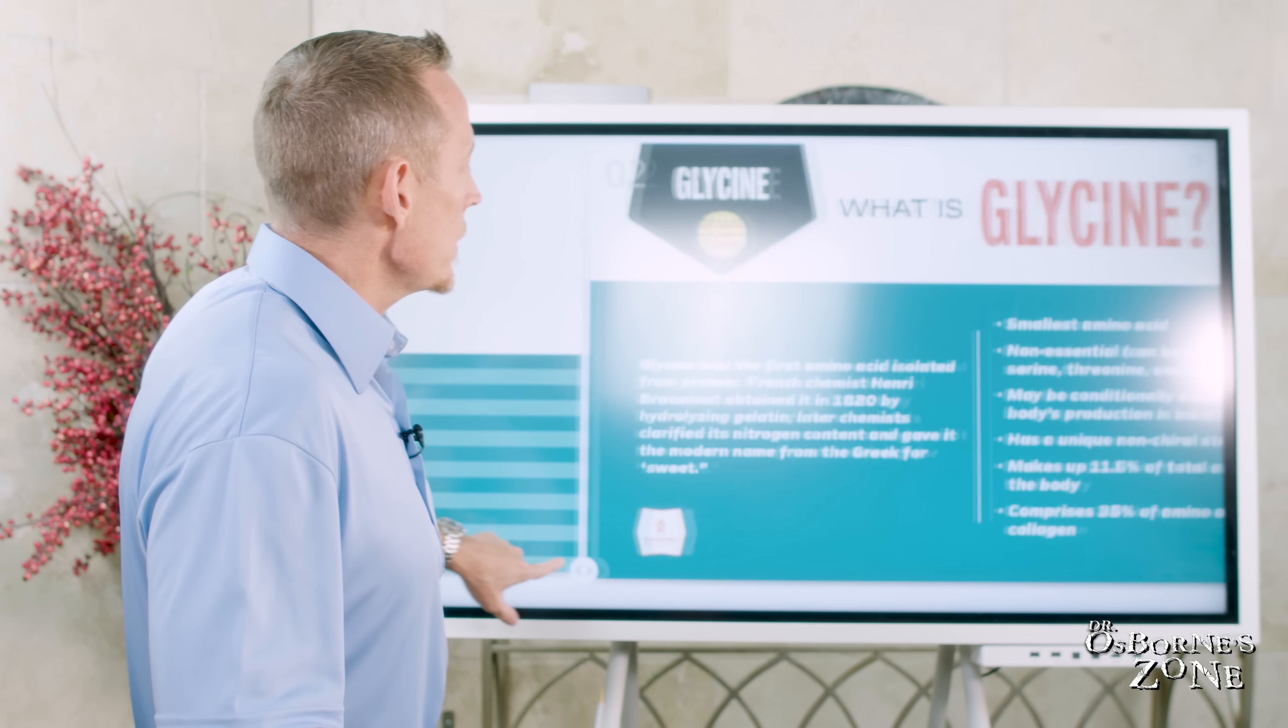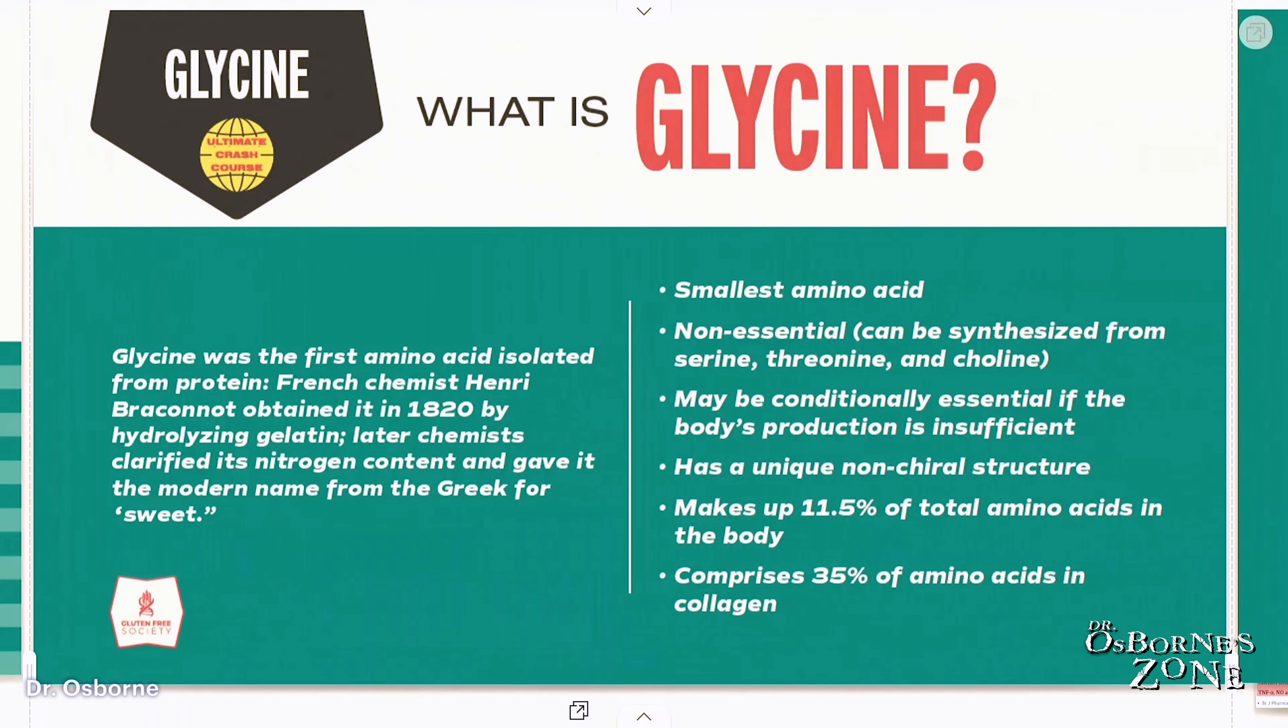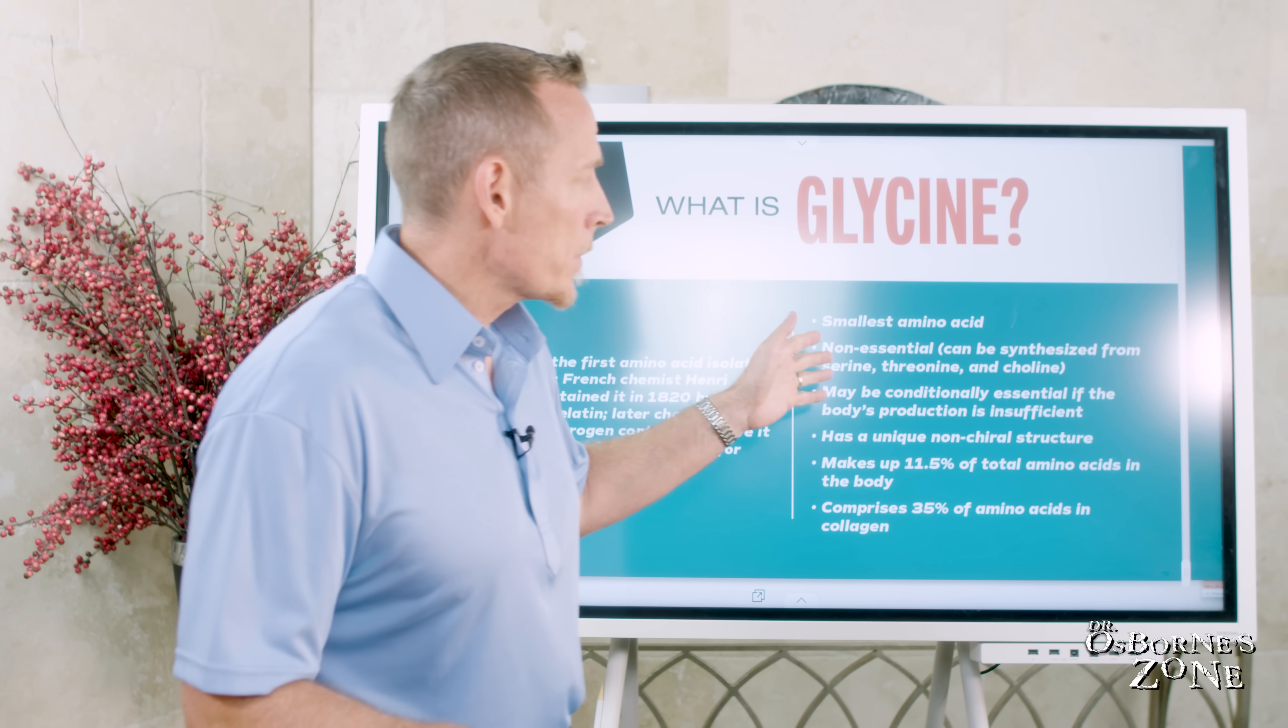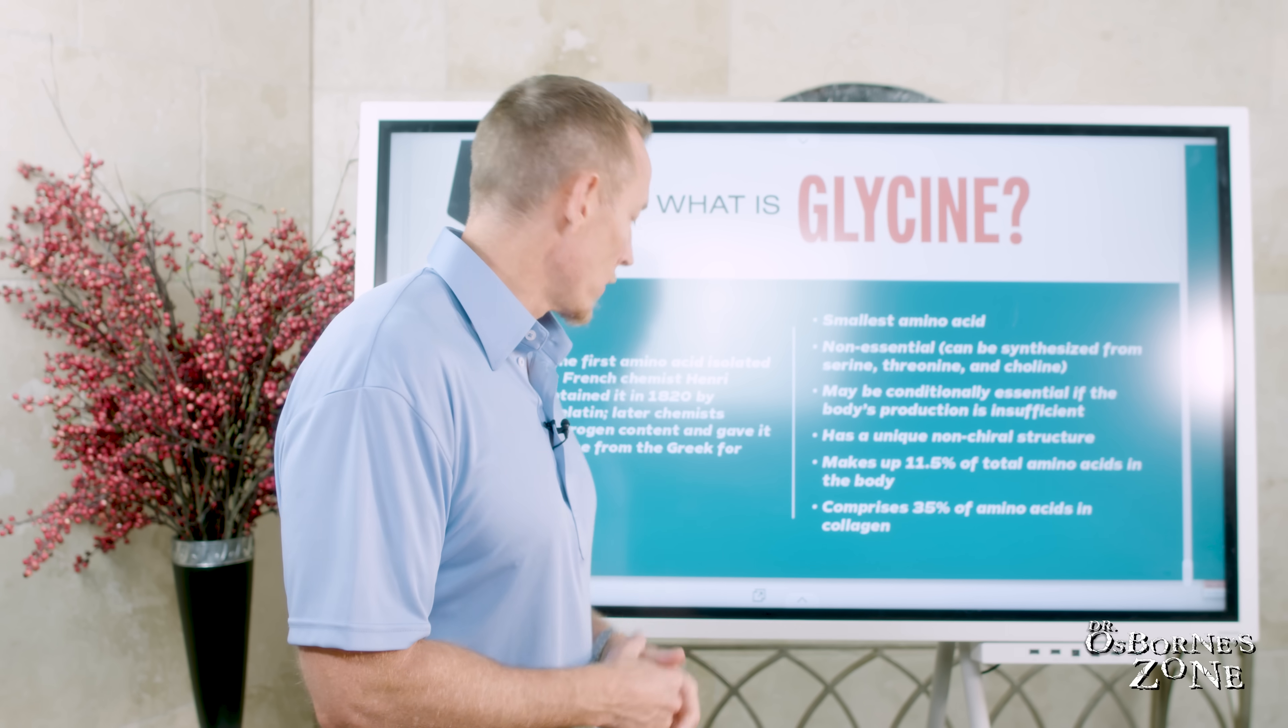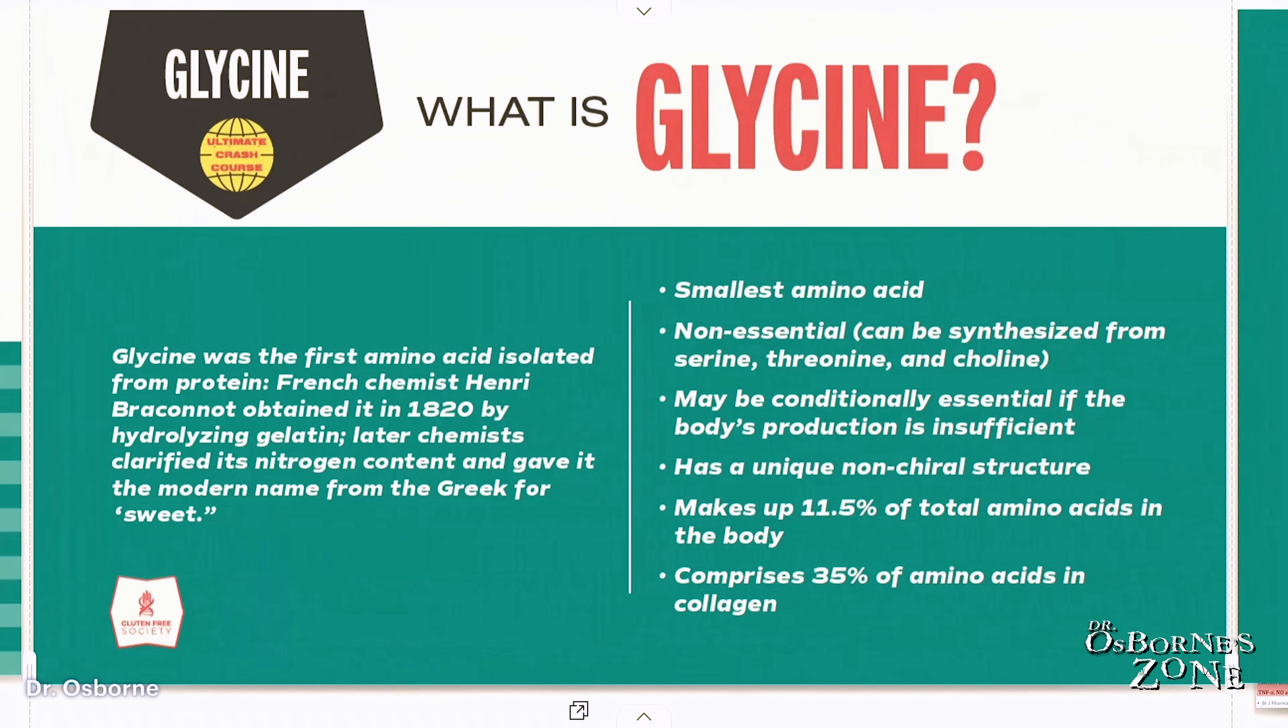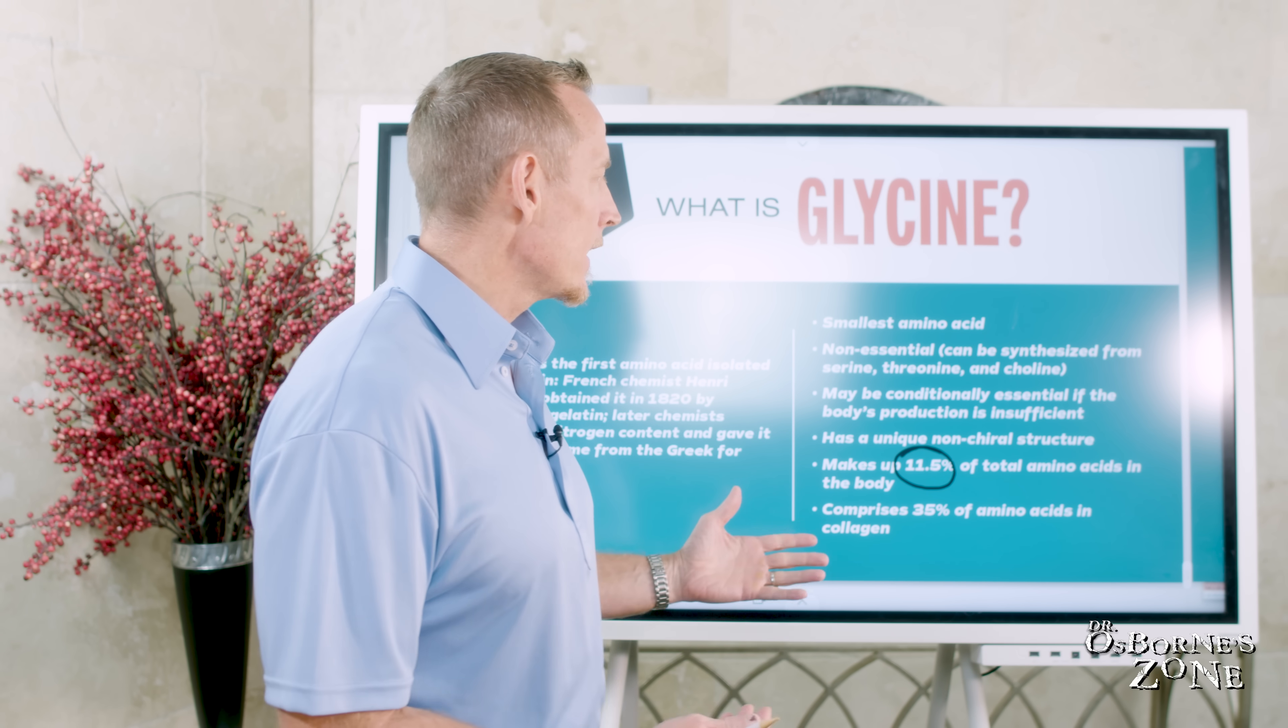Now, what is glycine? Glycine was the very first amino acid isolated from protein. A French chemist, Henry Braconneau, obtained it in 1820 by hydrolyzing gelatin. Later, chemists clarified its nitrogen content and gave it the modern name from the Greek for sweet, hence glycine. It's the smallest amino acid of all 20 that we have, and it's non-essential or classically considered non-essential, which is unique because it makes up 11.5% of the total amino acids in the body. So even though there are 20 of them, this one makes up almost 12% and it's considered non-essential.